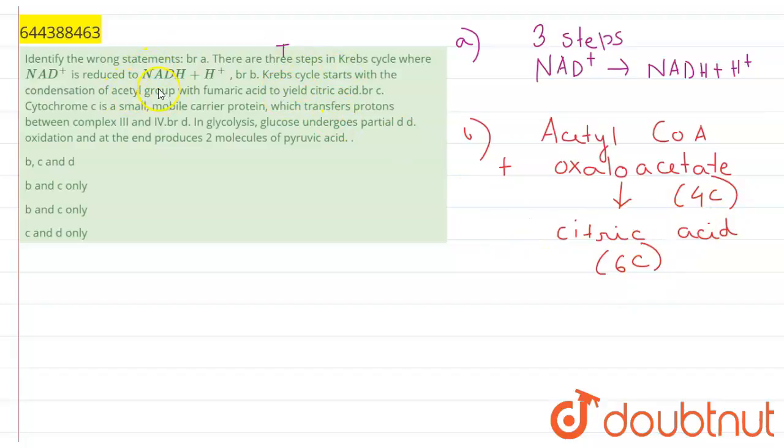The third statement is: cytochrome c is a small mobile carrier protein which transfers protons between complex three and complex four. Cytochrome c is a small heme protein whose function is ATP synthesis. They do not transfer protons; they take up electrons, and by taking up electrons they help in ATP synthesis. ATP is the unit of energy, so this becomes a false statement.